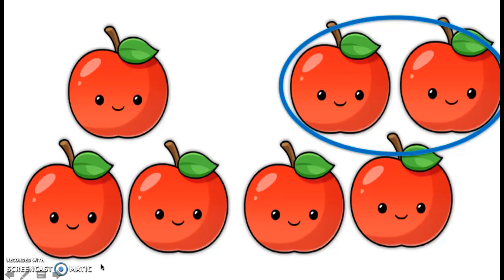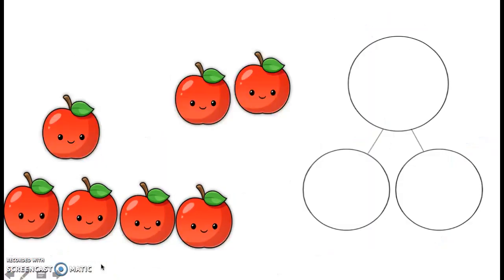So two is going to be one of my parts. Can you tell me what my other part is going to be? Five. How did you figure that out, friend? I hope that you counted all of the apples that were not inside of the circle. One, two, three, four, five. Perfecto. Okay, so I know my parts, and I'm going to try to do them in my number bond now.